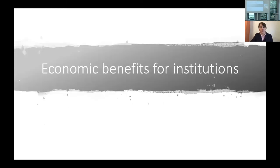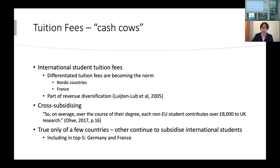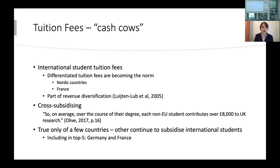What may be very relevant to this audience in trying to get universities to commit financially to internationalization is the economic benefits for institutions. The first thing always talked about is tuition fees and the concept that international students might just be cash cows. International student tuition fees are becoming the norm in terms of differentiating fees for domestic and international students. The idea is that international students who come for a degree may not stay and participate in the economy the way domestic students might, and they haven't contributed through tax payments which fund universities in many countries.